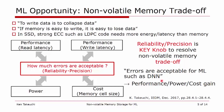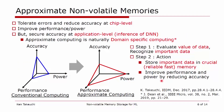This concept strongly depends on the applications, so it's naturally domain-specific computing. There are two steps: first, we have to evaluate the value of data — we have to recognize important data and unimportant data — and make actions such as storing important data in reliable, fast memories.